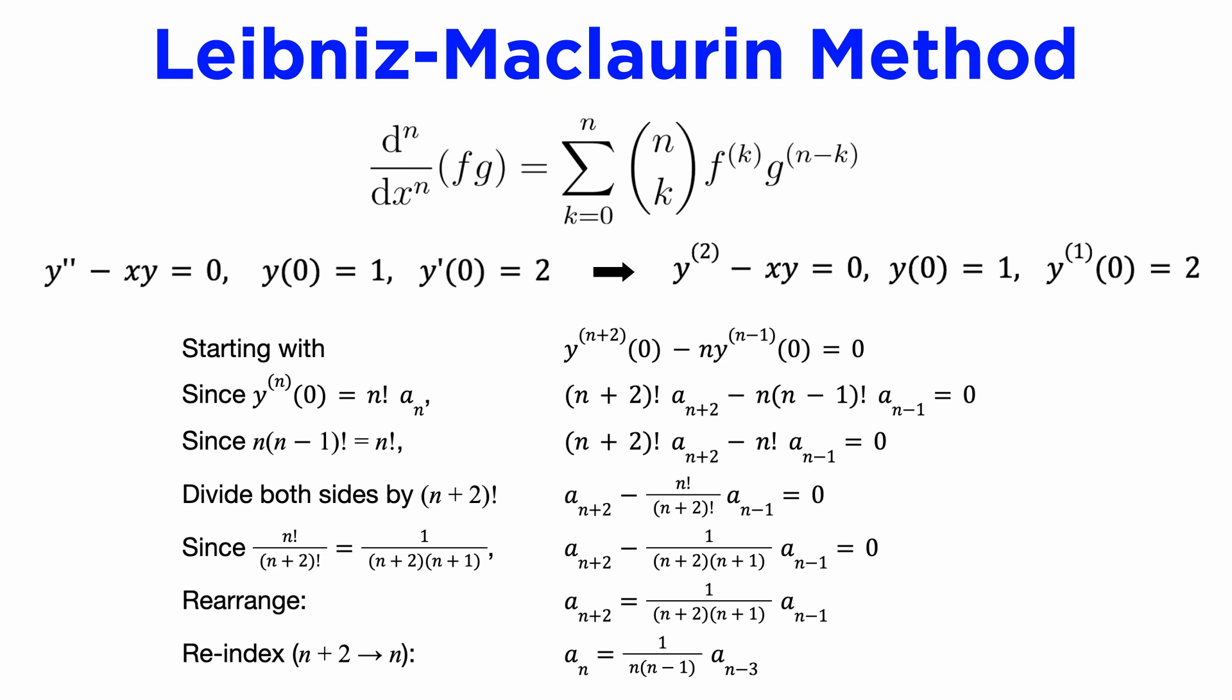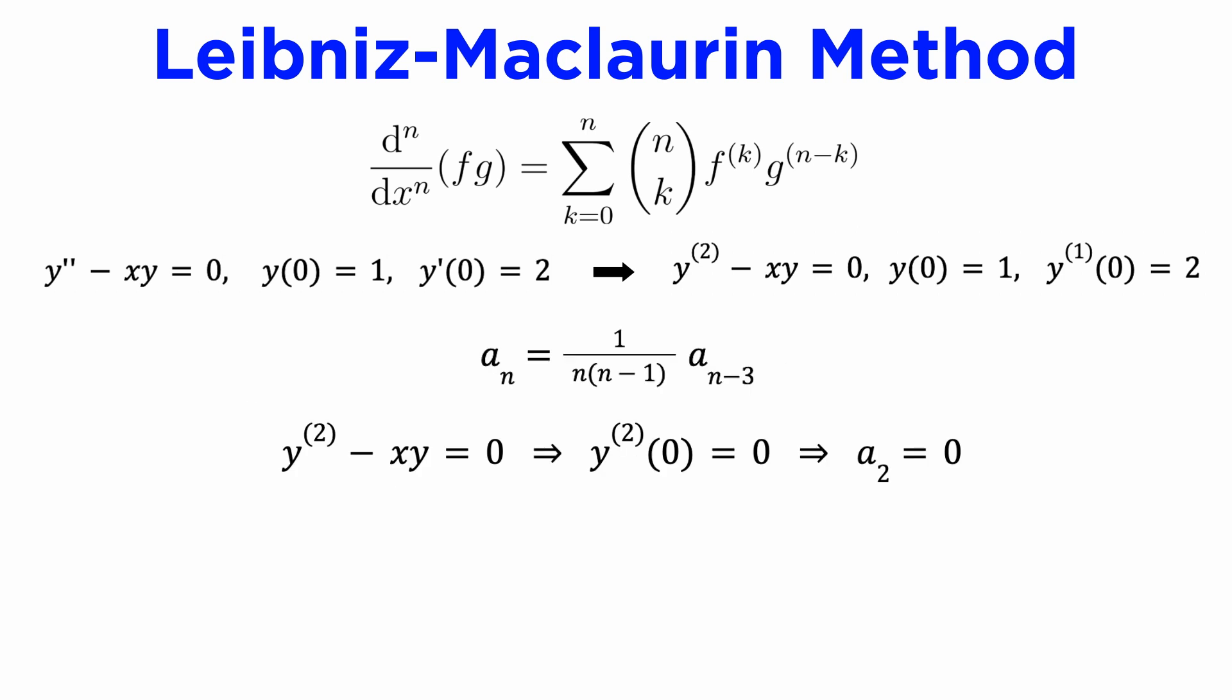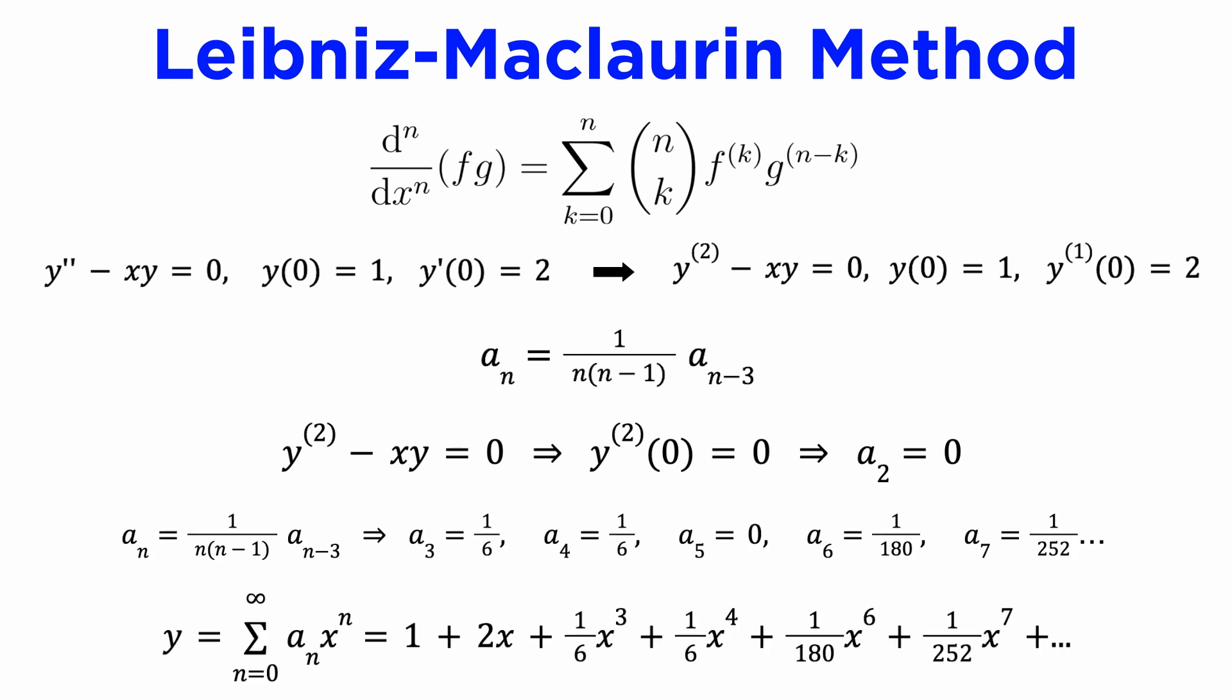Lastly, we can re-index by subtracting two from all our n's, and we get our recurrence relation, which is the same answer as last time with quite a lot less work. This time, in order to find the value of a_2, we need to return to the original differential equation, y double prime minus xy equals zero, and plug in x equals zero, and this gives y double prime of zero equals zero, and so a_2 is zero, and this gives us our particular series solution.